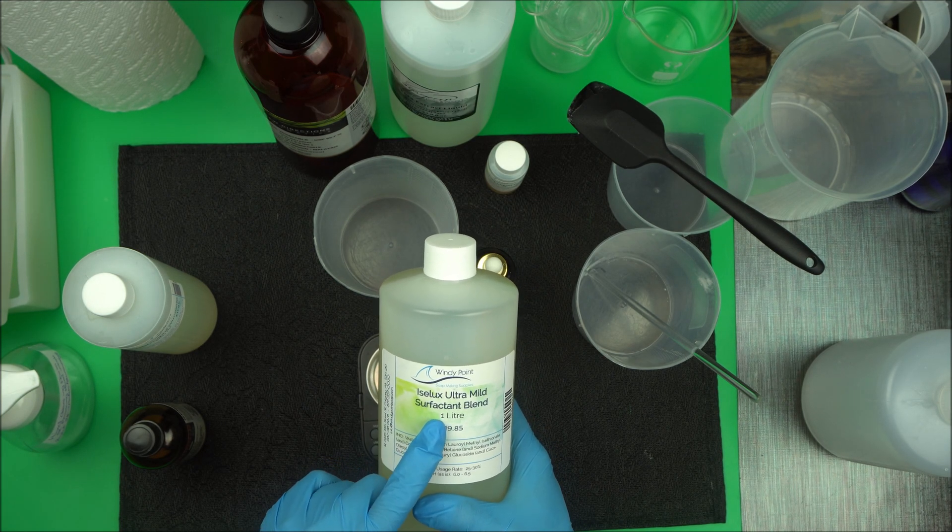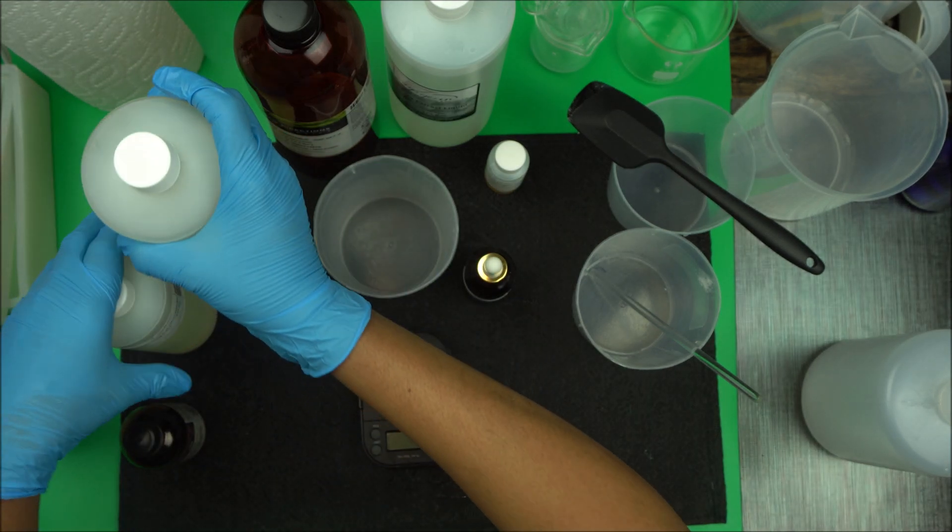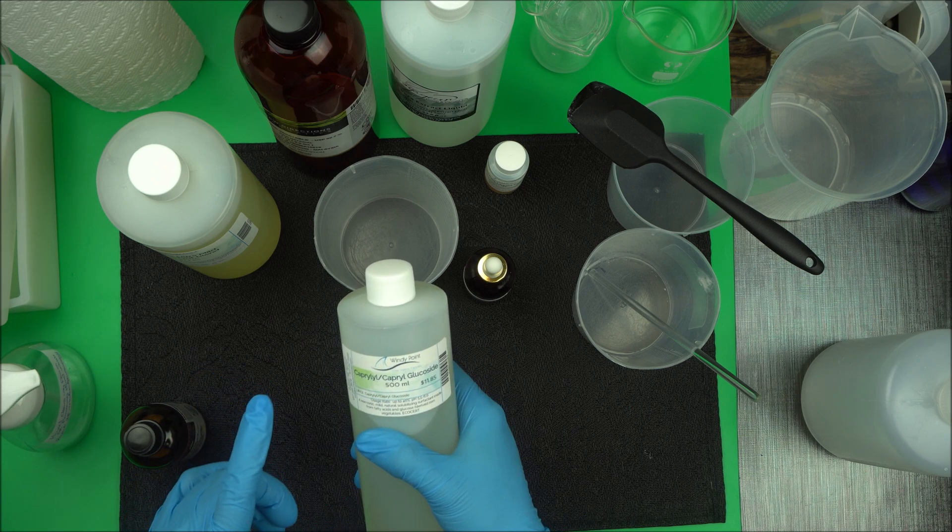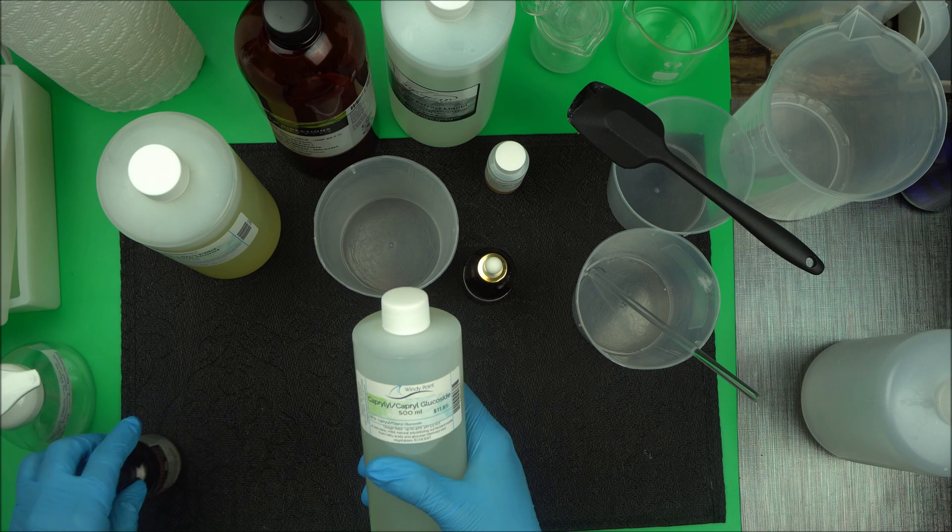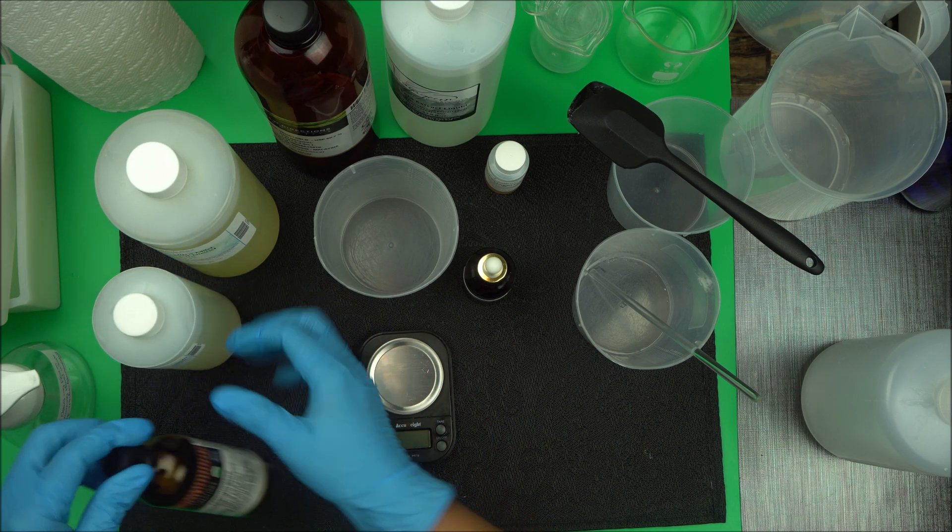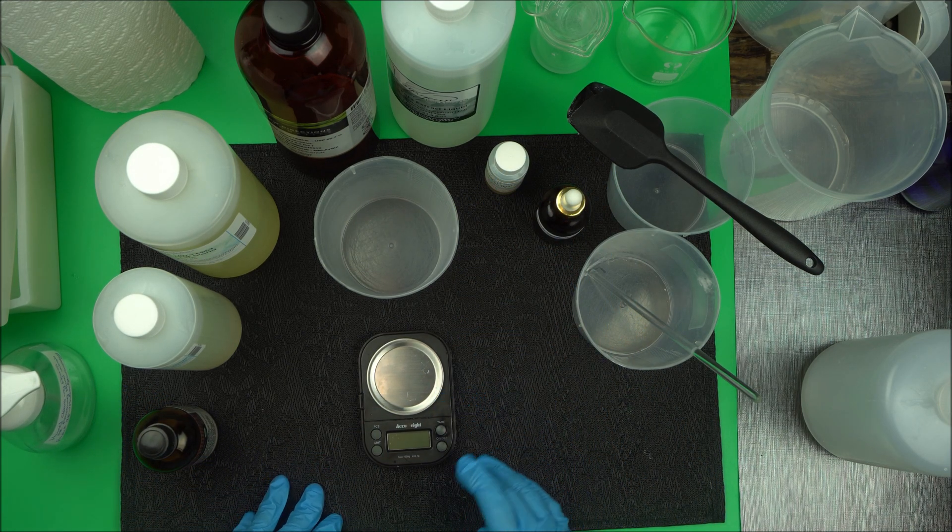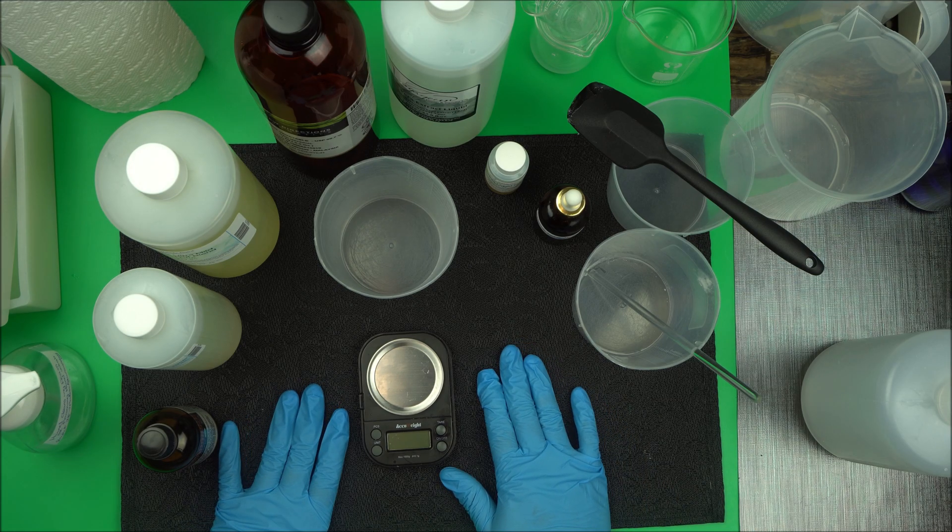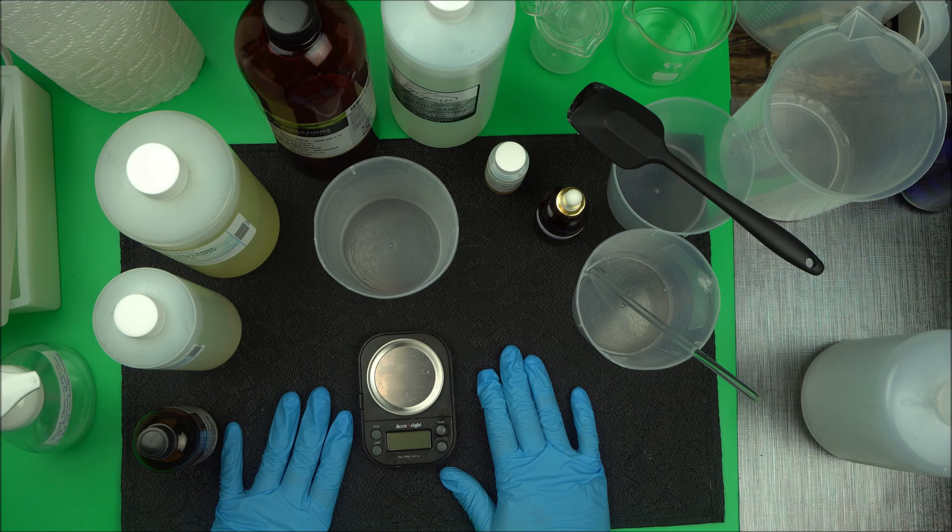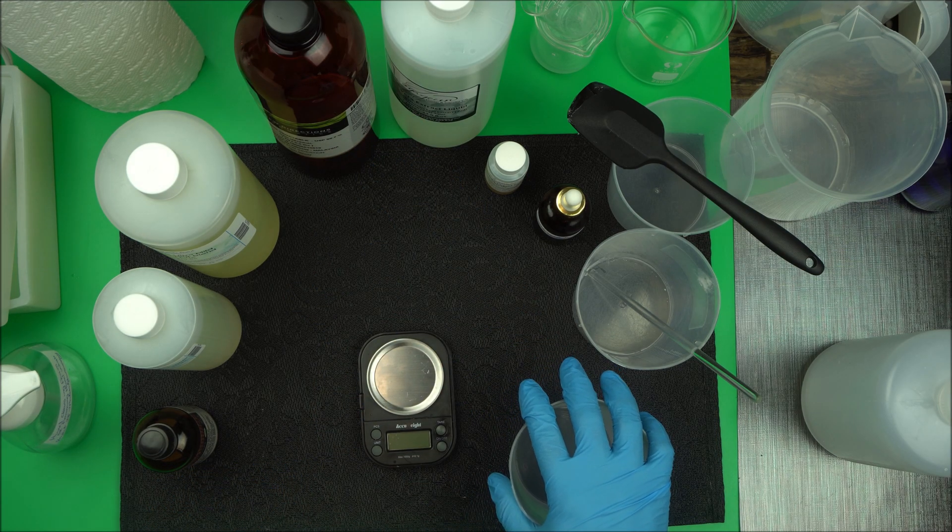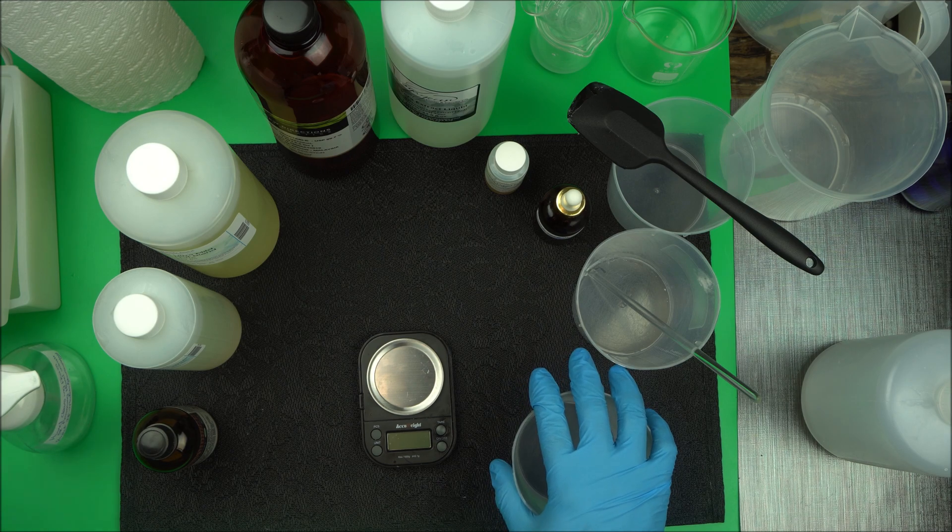We're going to be using Surfactant Blend Ultra, called Isoloc Ultra Mild, available at 20%. We'll also be using a solubilizing surfactant, Capric Capri Glucoside, to solubilize the essential oil. It's very essential that you follow the formulation guide available at naturalskincareschool.com. This is a two-phase formula: we have our water phase, our surfactant phase, and our essential oil phase.